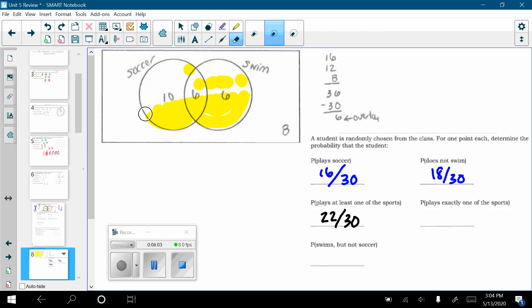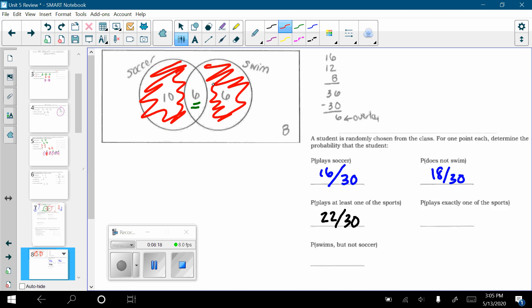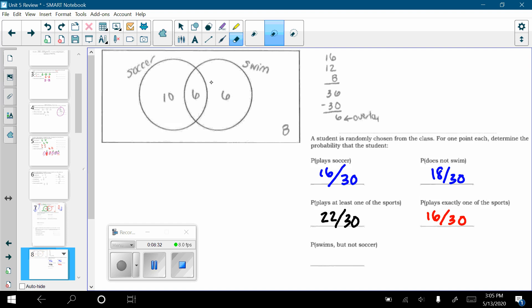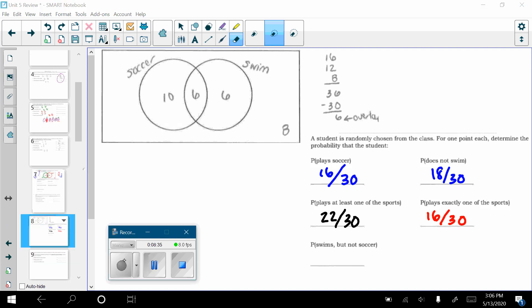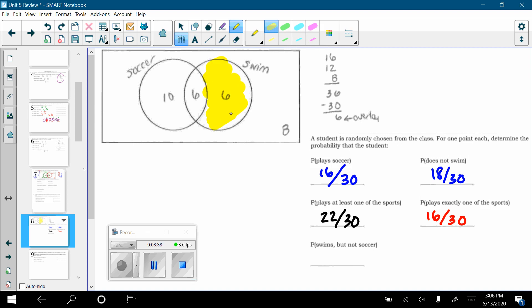The next question twists that up a little bit. And it says, what is the probability of playing exactly one sport? Well, these folks in the overlap play two sports. So, I want to take the people who play only soccer or who only swim. I do not want to include that overlap. So, I would have 16 out of 30. The next question says, what is the probability of someone swimming, but not playing soccer. And so, within my diagram, the people who swim, but are outside the soccer circle are those 6 only. So, my answer for this part is 6 out of 30.